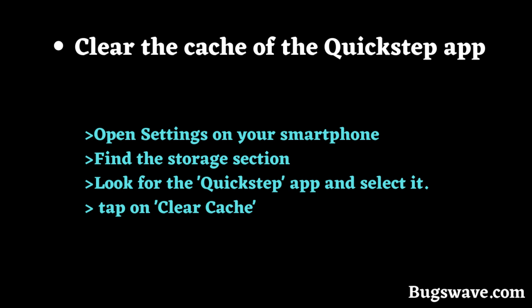To clear the cache, navigate to the Settings on your smartphone, then find the Storage section. Look for the Quick Step app, select it, and finally tap on Clear Cache to remove any temporary data that might be causing the problem.